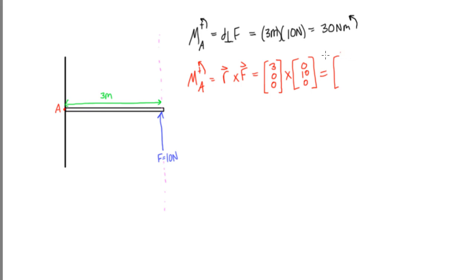So when we cross these, the top element will have 0 times 0 minus 10 times 0. The bottom element will have 3 times 10 minus 0 times 0. And the middle element will have 0 times 0 minus 3 times 0. This gives us a vector that is [0,0,30], so our moment will be 30k hat, and this is also in newton meters.